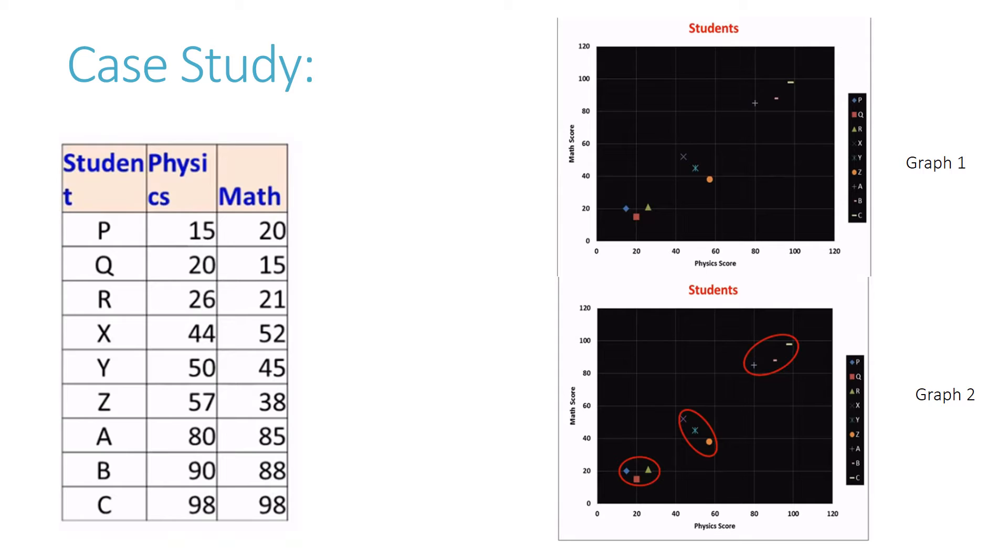Imagine a list of students with marks in physics and mathematics. Graph one plots the points, and graph two, which is shown here, forms the clusters. Here, the x-axis represents marks in physics score and the y-axis represents marks in math scores.